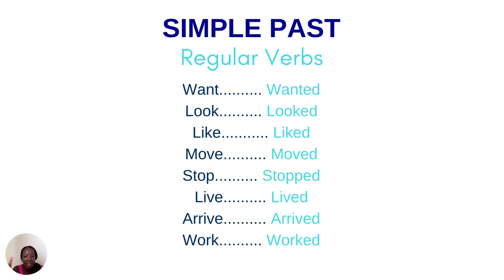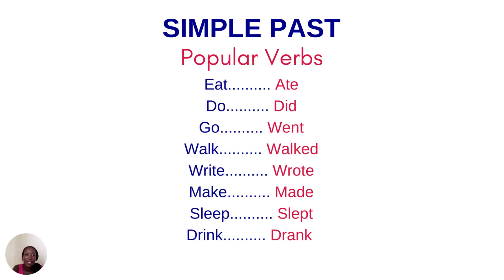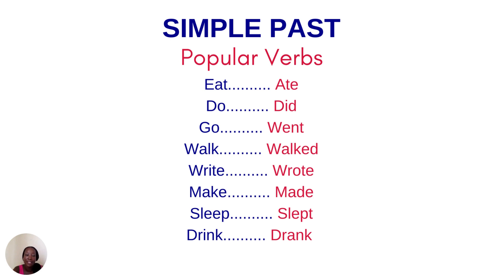Let's have a look at some popular irregular verbs. We have 'eat', which goes to 'ate'. 'Do' goes to 'did'. 'Go' goes to 'went'. 'Walk' to 'walked'. 'Write' to 'wrote'. 'Make' to 'made'. 'Sleep' to 'slept'. And 'drink' to 'drank'. So those are some popular verbs that you may see. Note that 'walked' is actually a regular verb, but it's also a popular verb.